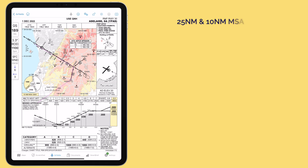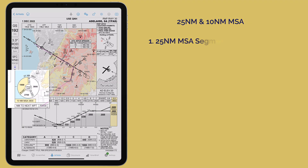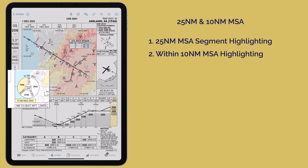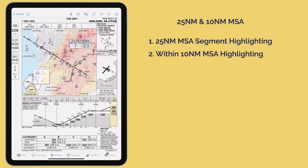On the approach plate itself, the 10 and 25 mile minimum sector altitudes, or MSAs, are dynamically highlighted as you enter each respective sector.